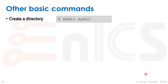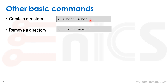What other basic commands should we know? To make a new directory, I use the mkdir command — make directory. So 'mkdir mydirectory' creates a new directory called mydir. To erase that directory, I do 'rmdir mydirectory'. Just so you know, if you try to remove a directory that's not empty, it will fail.